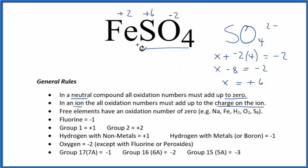If you add all of these numbers up, four times minus two plus six plus two, you will get zero, which will be the oxidation number in neutral compounds.